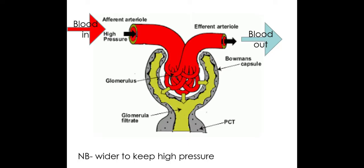Looking at the glomerulus in more detail, we have our network of capillaries surrounded by the Bowman's capsule. We have the afferent arteriole which brings blood to the glomerulus, and it is under a higher pressure than the efferent arteriole. The efferent arteriole is the blood vessel leaving the glomerulus. It's important we use comparative statements: the afferent arteriole has a higher blood pressure than the efferent arteriole because its lumen is wider than that of the efferent arteriole.